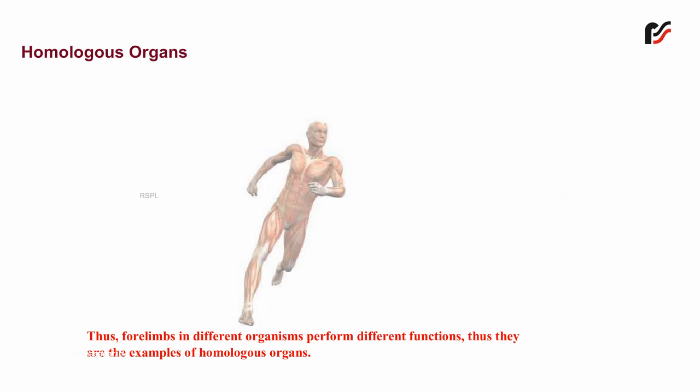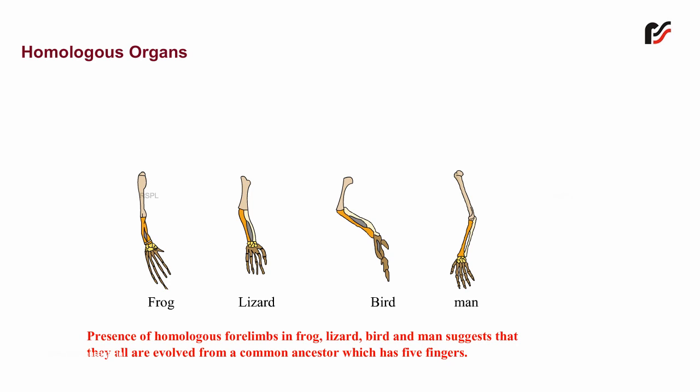Thus, forelimbs in different organisms perform different functions. Thus, they are the example of homologous organs. Presence of homologous forelimbs in frog, lizard, bird and man suggest that they all evolved from a common ancestor which had five fingers.